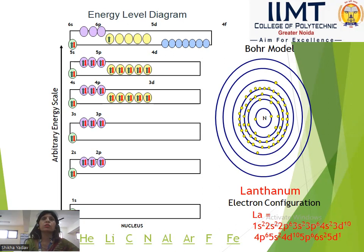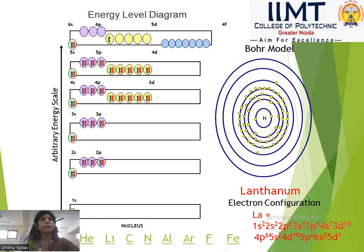The last electron of lanthanum enters into the 5d subshell — specifically 1 electron in 5d¹. This makes it an exception where the last electron goes into the 5d rather than the 4f shell.